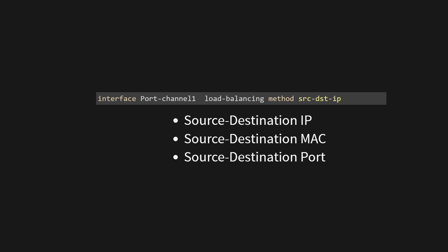When traffic enters the port channel interface, the router will use the combination of source and destination IP addresses to decide which physical link within the port channel should carry the traffic. This helps distribute the load across the links and ensures more efficient utilization of the available bandwidth. Keep in mind that different Cisco devices and IOS versions may support various load balancing methods, and SRCDSTIP is just one of several options available. It's essential to choose the appropriate load balancing method based on your network's requirements.